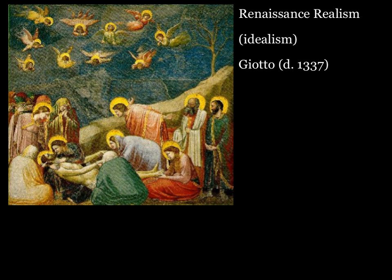The first art movement of the Renaissance period is called Renaissance realism, sometimes referred to as idealism. The trajectory really begins with the work of Giotto — an artist who, like Dante, has a foot in two worlds. He's living in the Middle Ages but looking forward to the Renaissance, at least in an artistic sense. The image shown here is one of his better-known frescoes, depicting the death of Jesus.